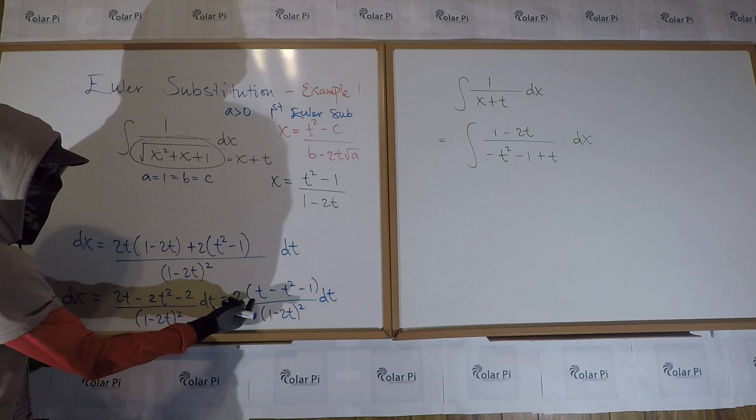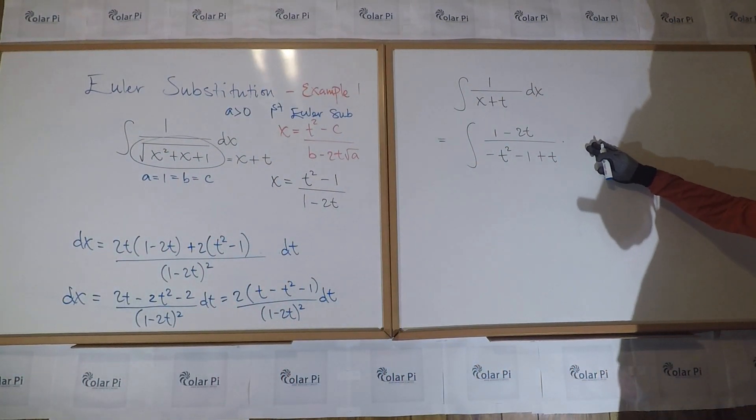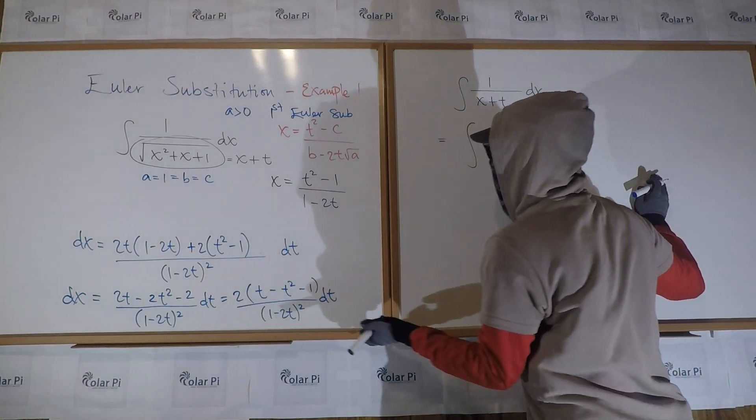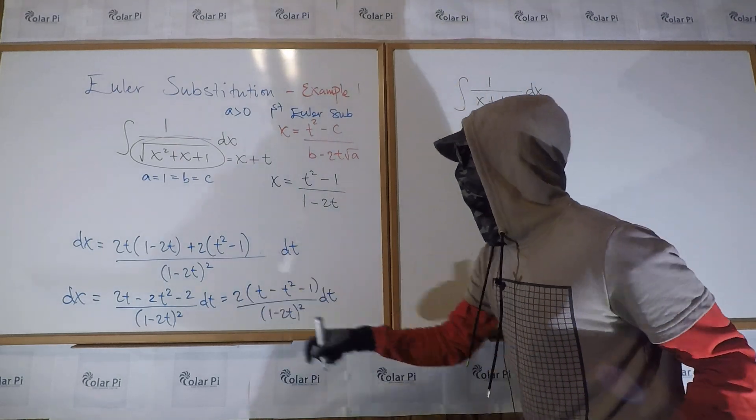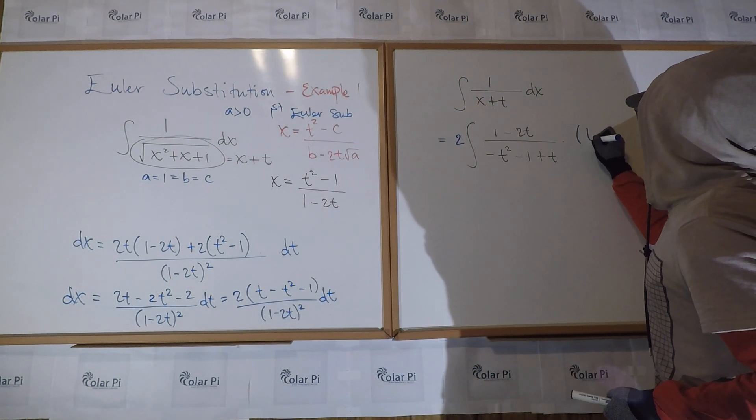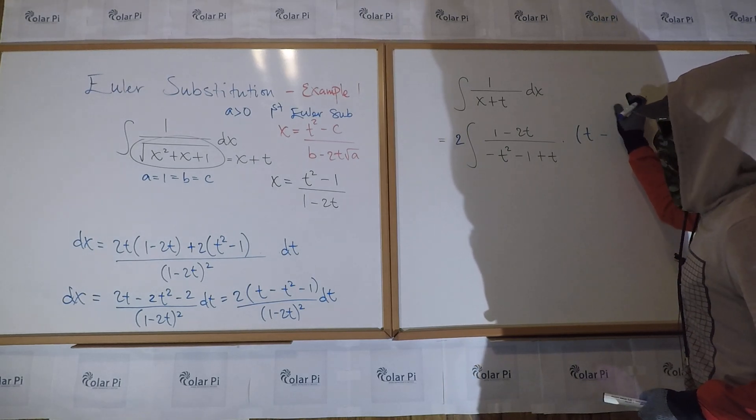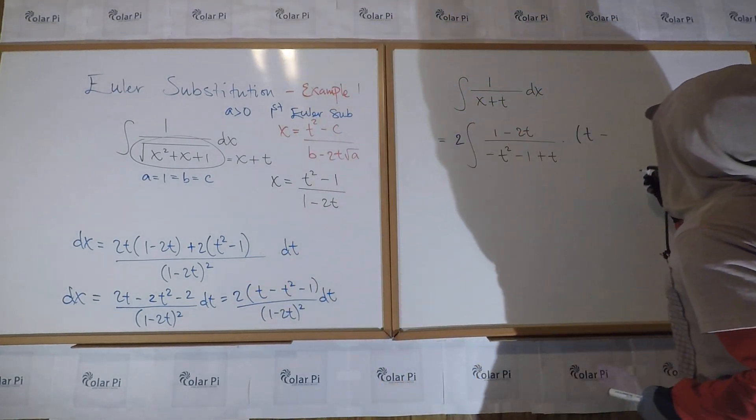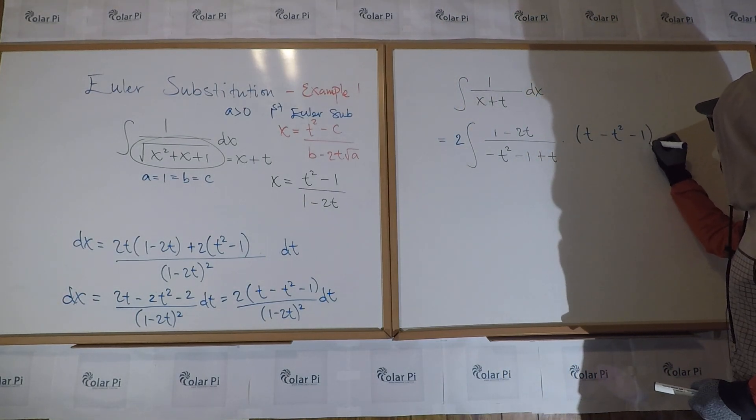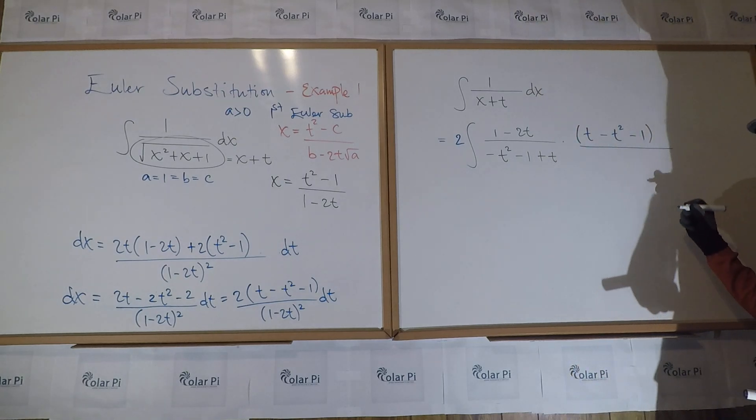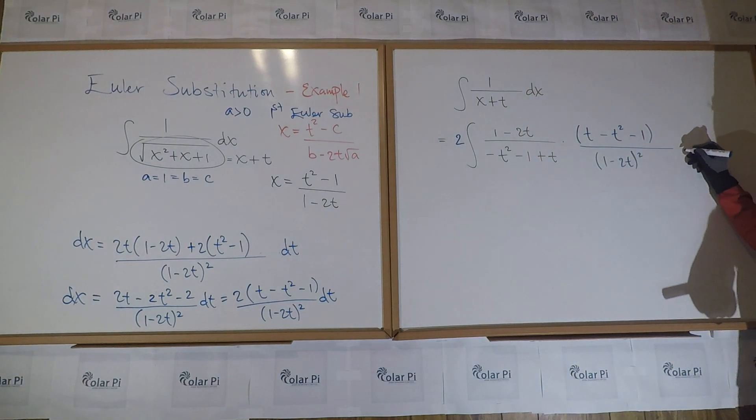Deja vu, one minus two T and that quadratic also. Because look here. If I replace DX with this right hand side, first I can throw the two in front. Otherwise I have T minus T squared minus one divided by one minus two T squared and then DT.